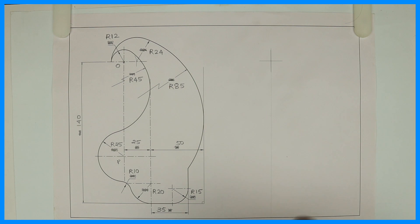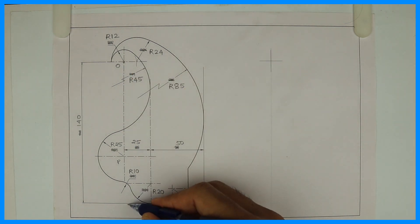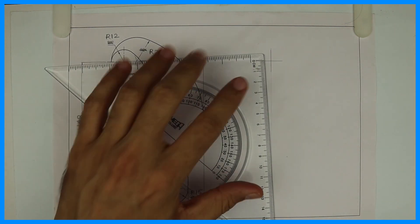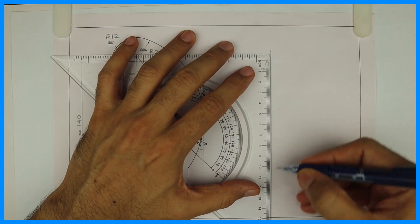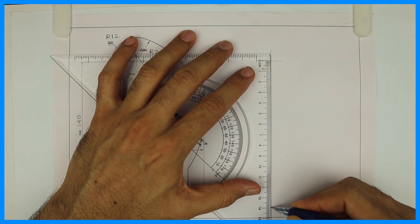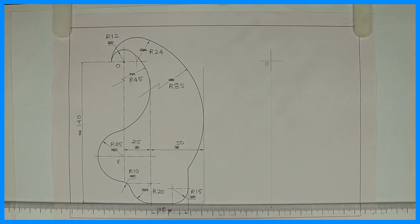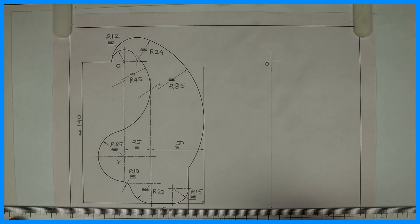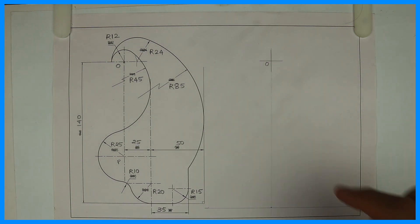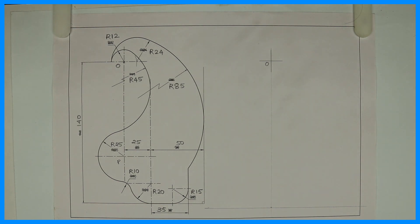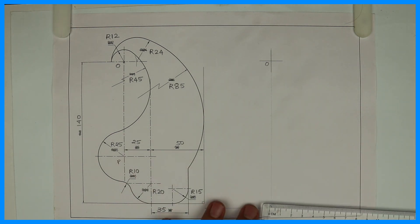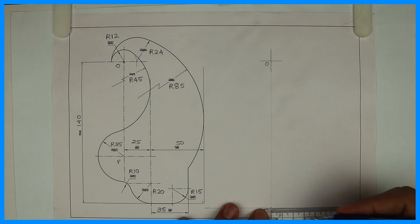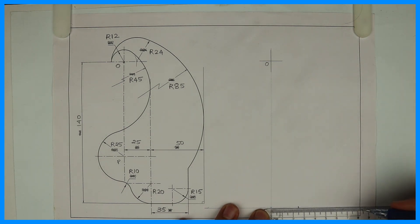Now we don't know the distance O to P, but we know the full distance, that is 140. So 140 is done. After that we have 25 and 50, so I'll take 25 and 50.